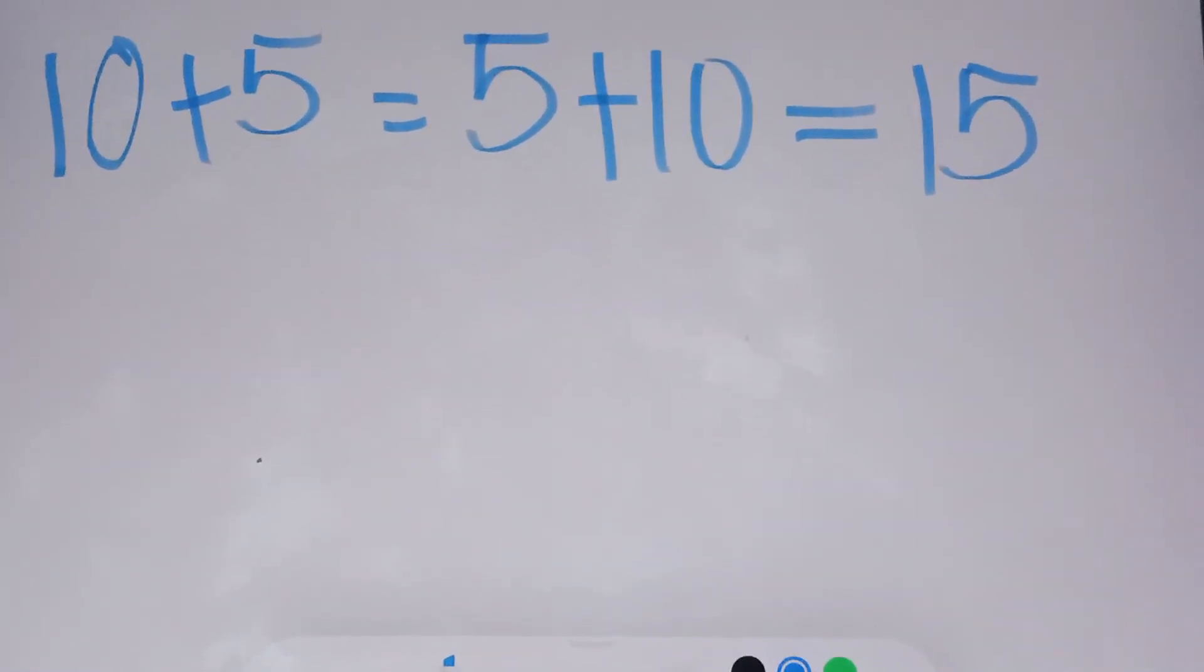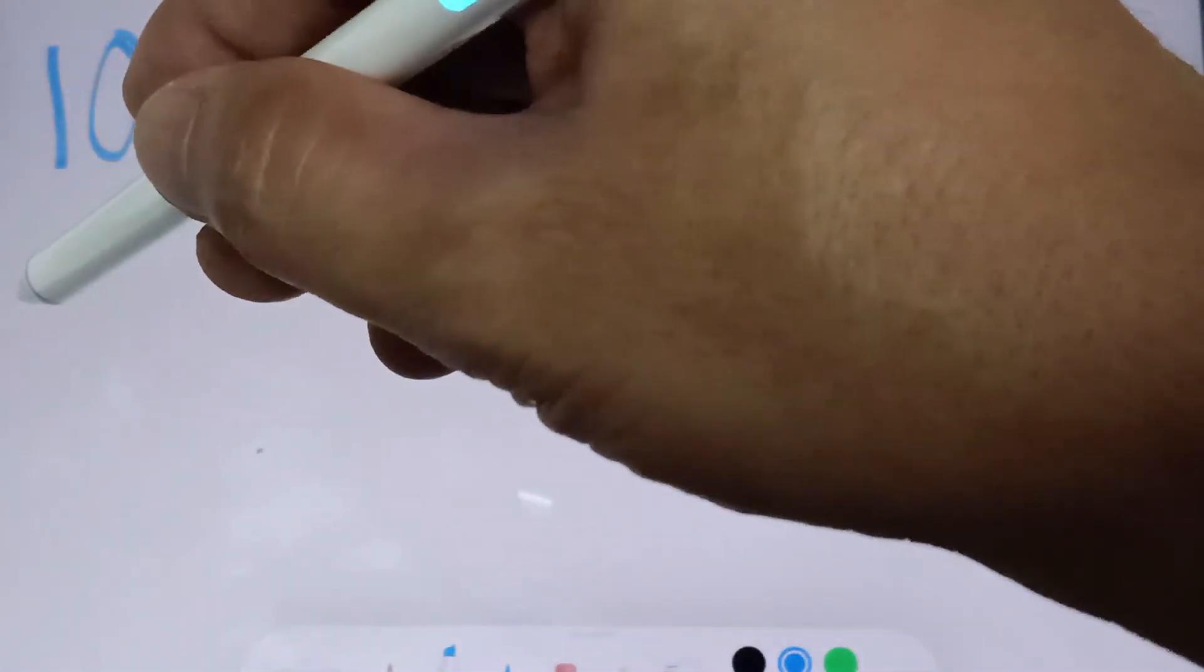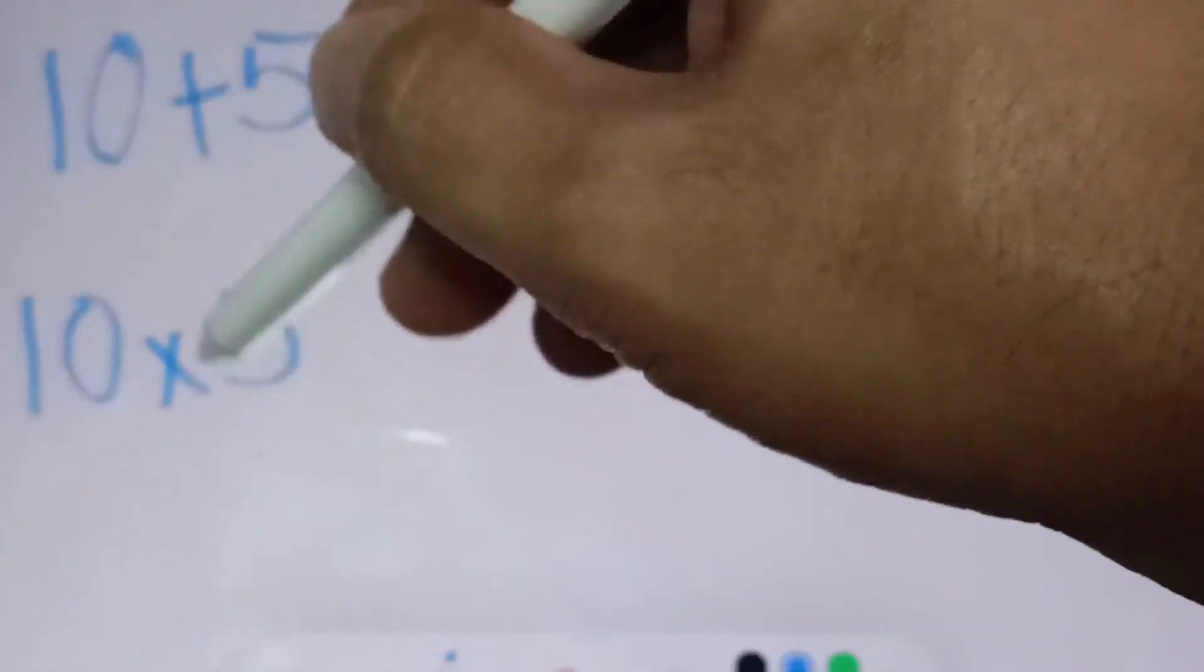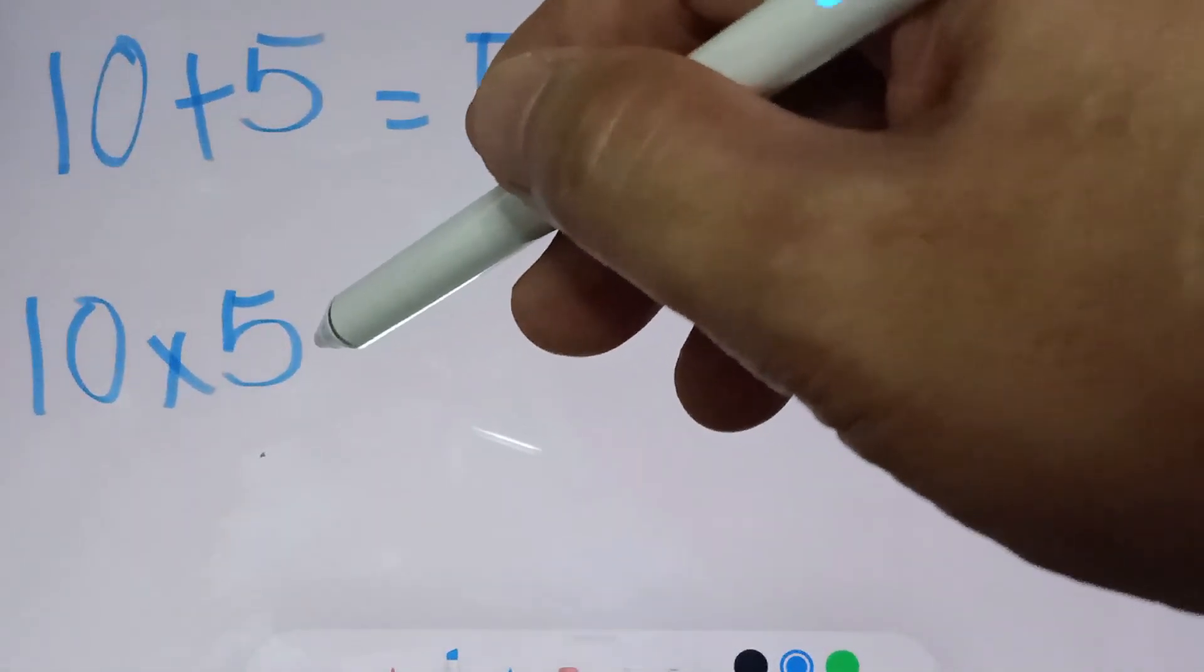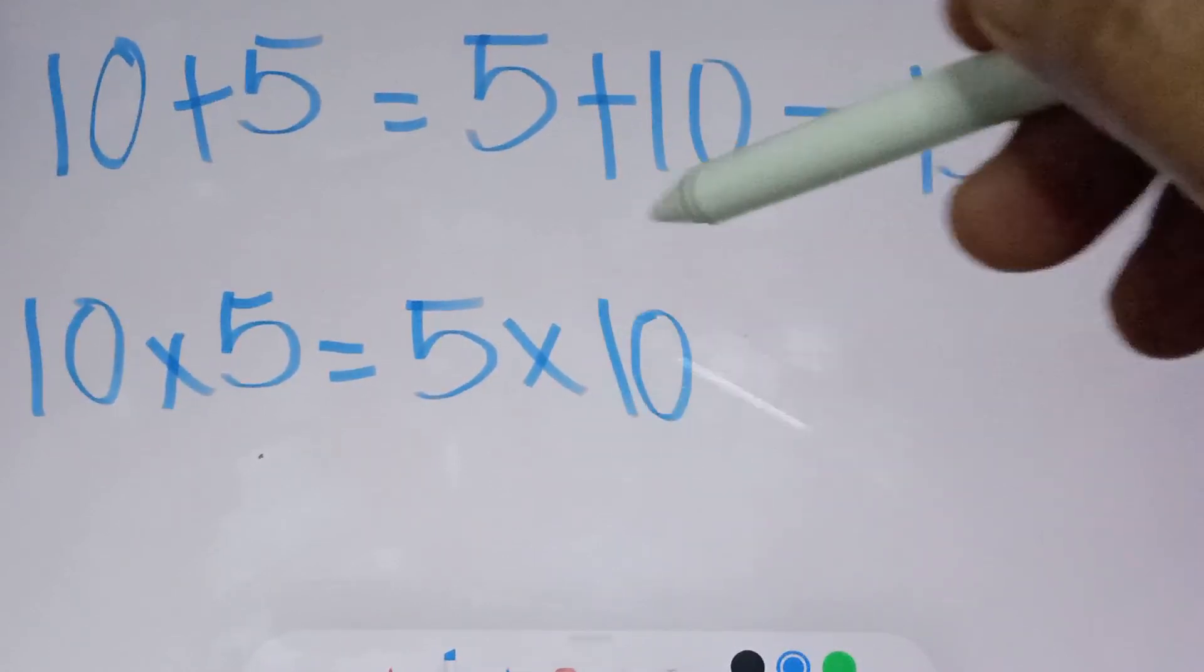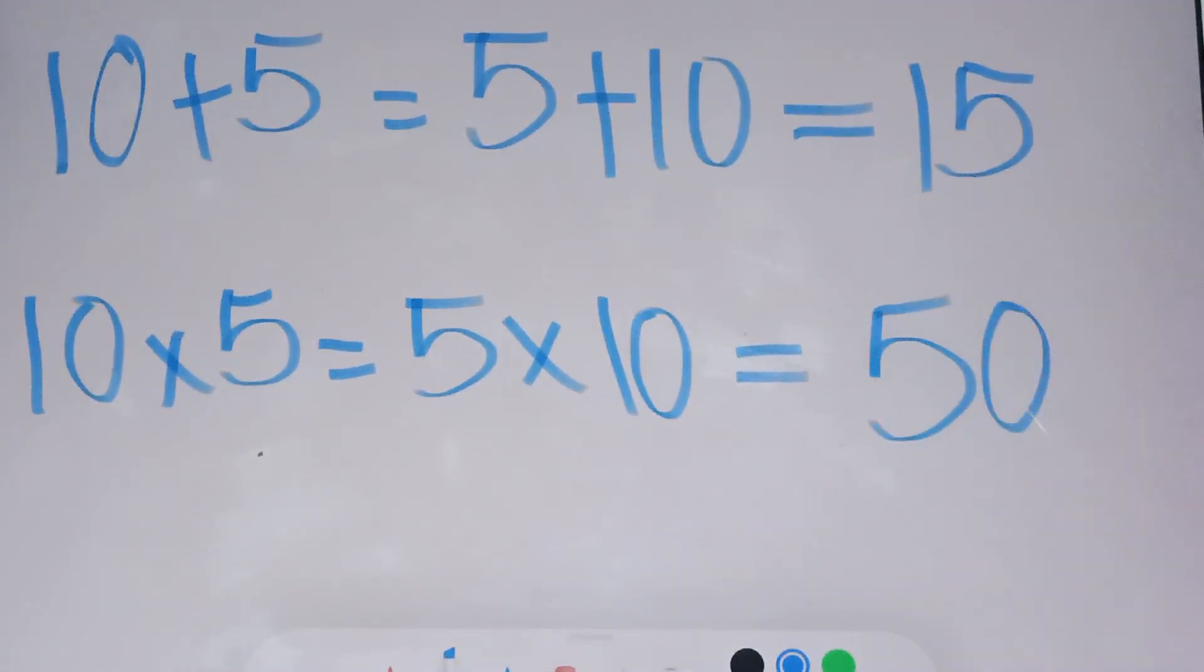But in multiplication, if you multiply 10 times 5, this is also equal to 5 times 10. And the answer is equal to 50.